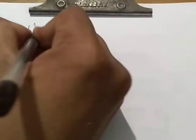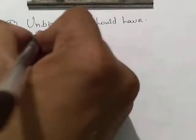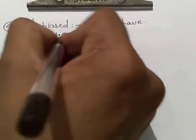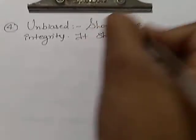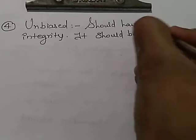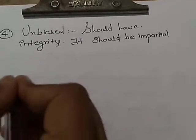Another fourth characteristic is unbiased. We can say that the information should have integrity. It should be impartial and free from any bias.